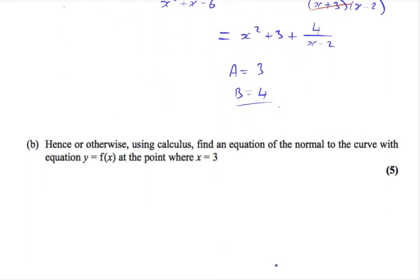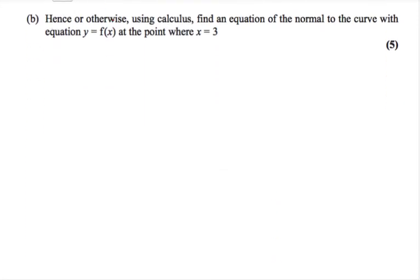Part B of the question says, Hence or otherwise, well, we know it's not going to be an otherwise, using calculus, which means either by differentiating or integrating, find an equation of the normal to the curve with equation y equals f of x at the point where x equals 3. From part A, we know that f of x equals x squared plus 3 plus 4 over x minus 2.